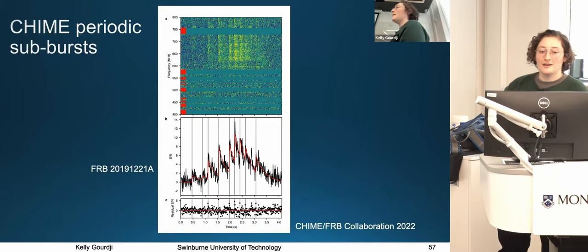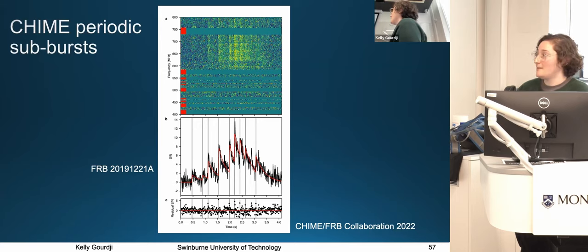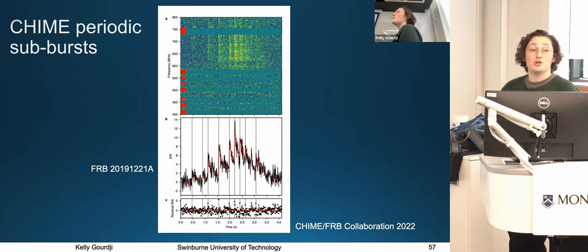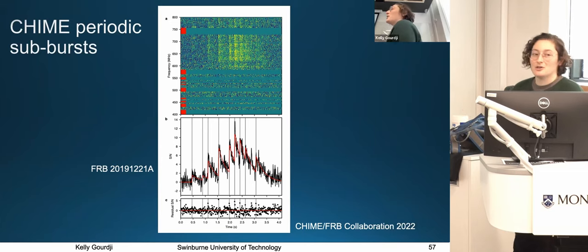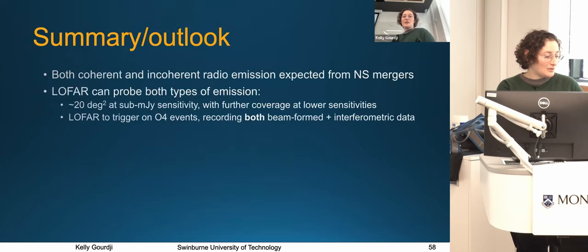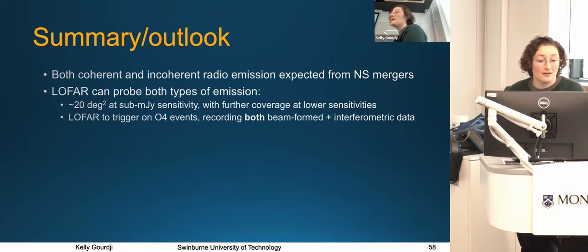CHIME has found a few FRBs consisting of sub-bursts with a periodic separation, and one of the explanations they entertain is consistency with pre-merger models. Ultimately, to convincingly claim a burst is related to a pre-merger model, you'll need additional information — you'll probably want an EM counterpart. To summarize: both coherent and incoherent radio emission is expected from neutron star mergers. Coherent radiation is yet to be confirmed, but LOFAR can probe both types of emission, and in O4, we'll hopefully be geared up to probe both.